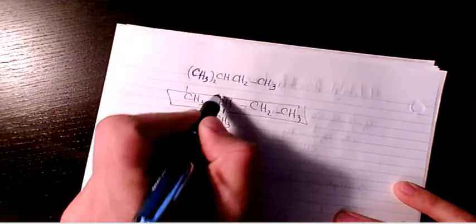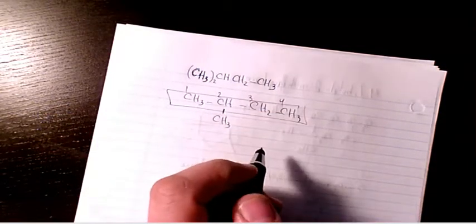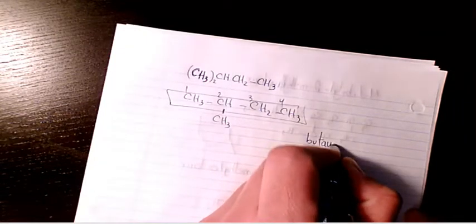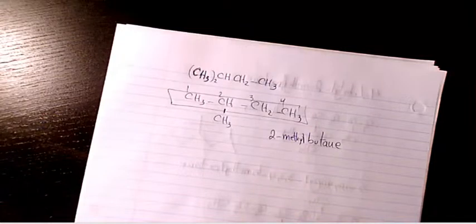So we have the main chain. We have one, two, three, four, so it belongs to alkane. We have four carbon atoms, so that's butane. And we have 2-methylbutane that will be the name of this organic compound.